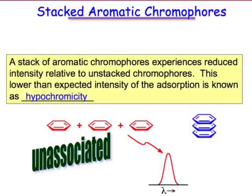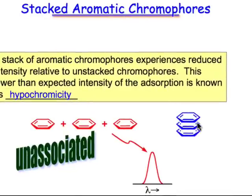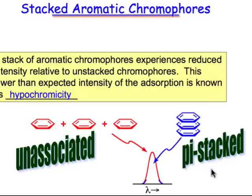Another important example of chromophore-chromophore interactions is in the molecule DNA. The stacking of the bases results in a reduction of intensity of those chromophores, and this reduction of intensity is known as hypochromicity. When the bases are unassociated, they have a higher absorbance, but as soon as they stack into the double helix of DNA, there's an interaction of those chromophores and a reduction in intensity. We call this pi-stacking of the chromophores.